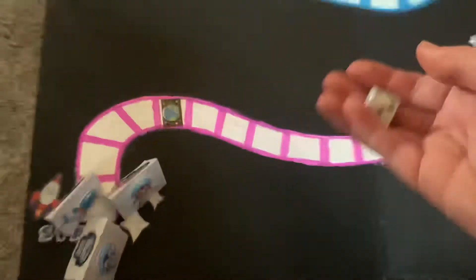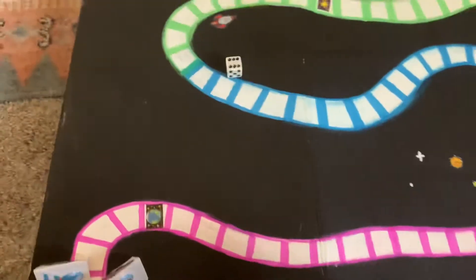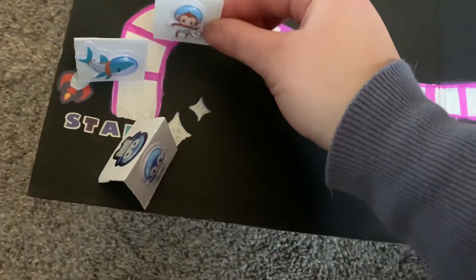First, place each playing avatar at the start line. Second, choose who rolls first and play clockwise. Roll the dice and move the avatar that many spaces.